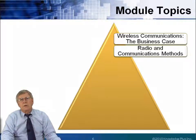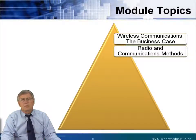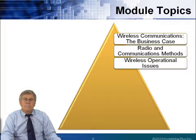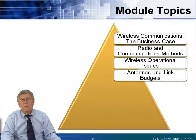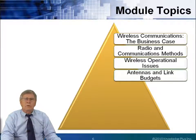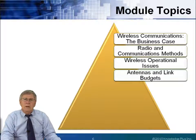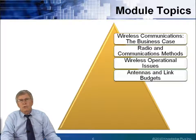We'll take a look at radio and communications methods in general, but very specifically how we do it with wireless. The issues dealing with how to operate wireless networks, behavior conditions, and so forth. We'll take a look at the antenna behavior, and we'll also take a look at something called a link budget — that's analyzing how the power is utilized going from a source to a destination in a wireless link.